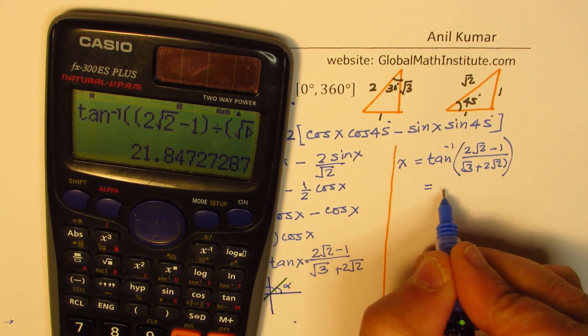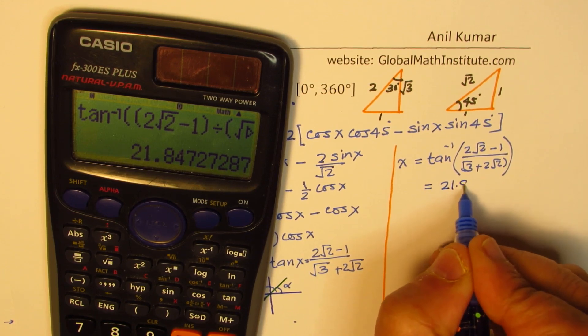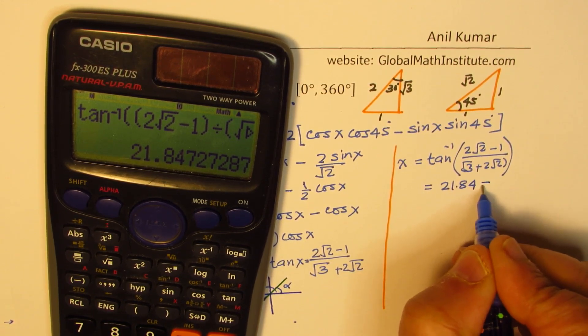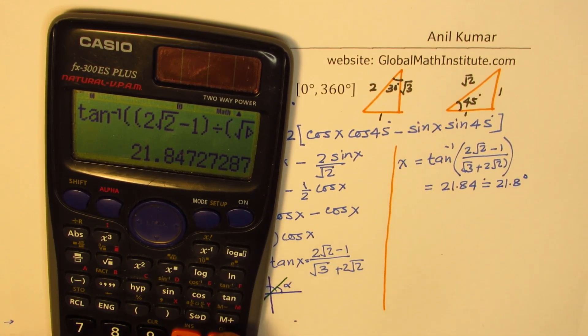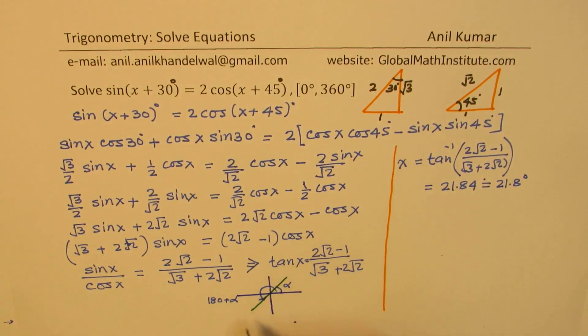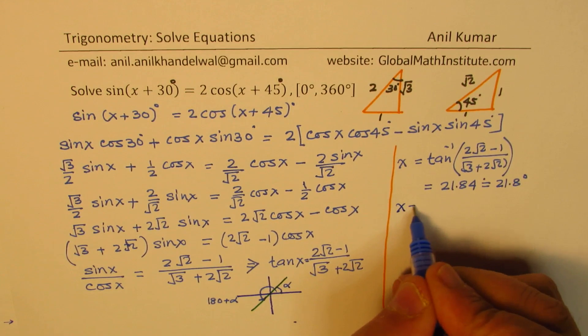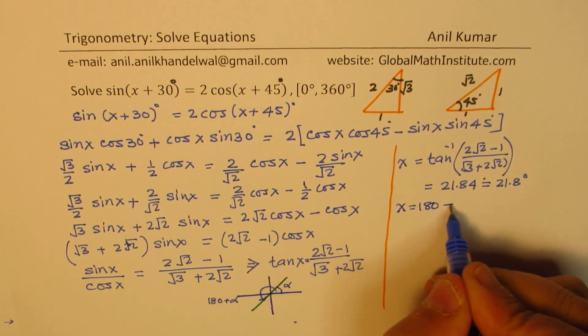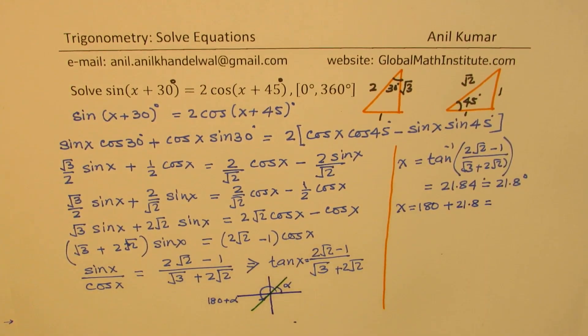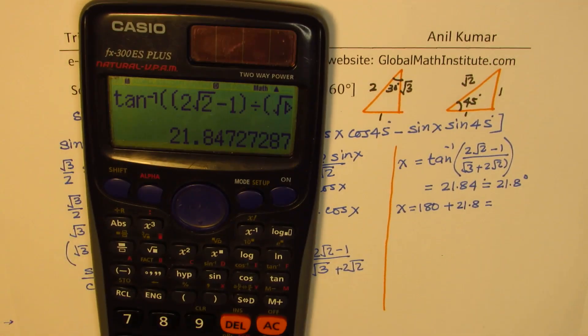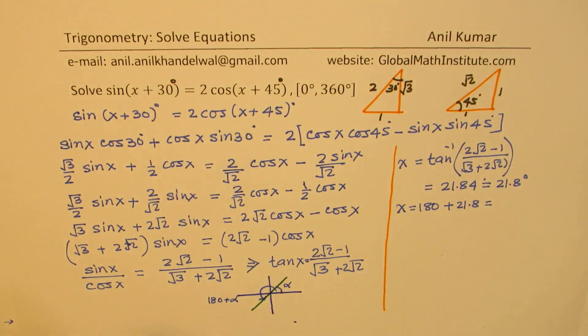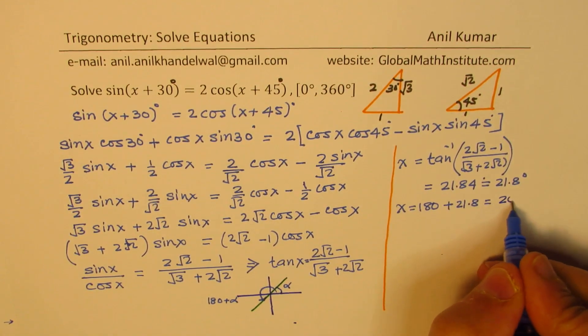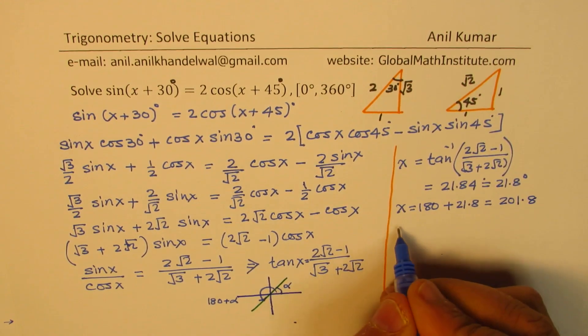So we get this angle as 21.84. So I'm just writing this as 21.8 degrees. The other angle will be, so x will also be equal to 180 plus 21.8. So let's add 180 to it. So plus 180, we get 201.84. So it is 201.8.